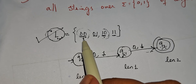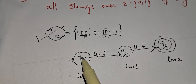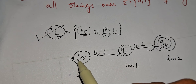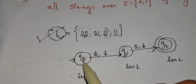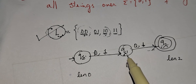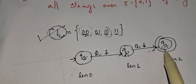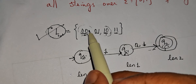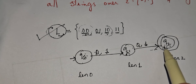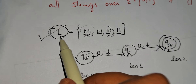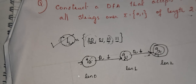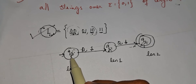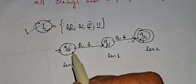A string is accepted by the automata when it reaches the final state from the starting state. For example, 00 is accepted because from q0 on 0 we go to q1, then on 0 we go to q2, which is the final state. Similarly 01, 10, and 11 are all accepted, so language L is accepted.